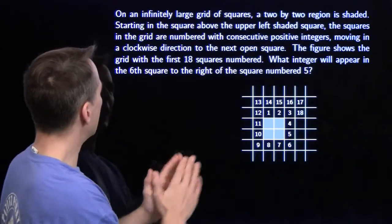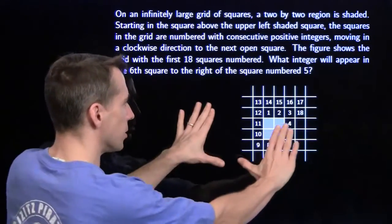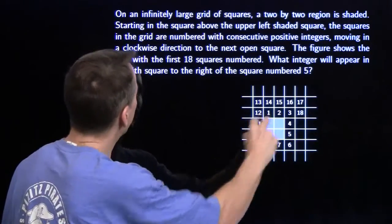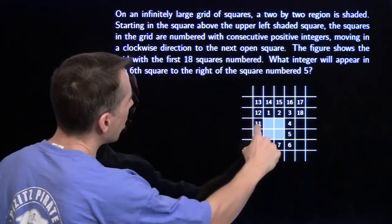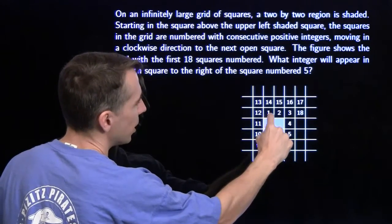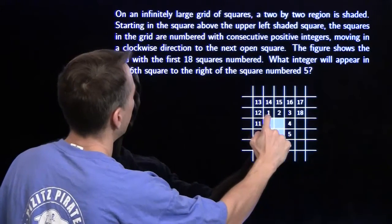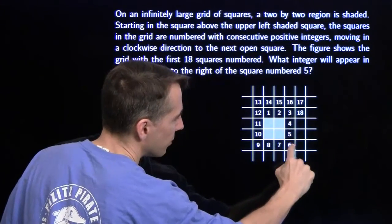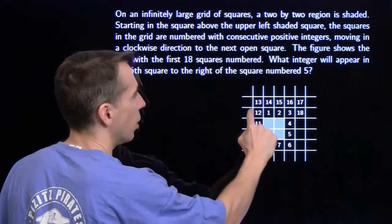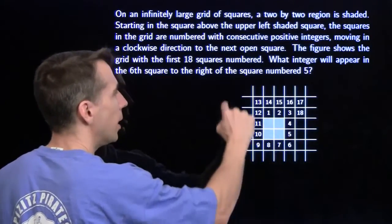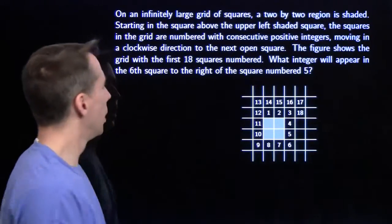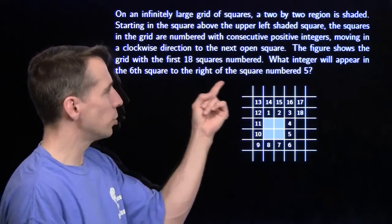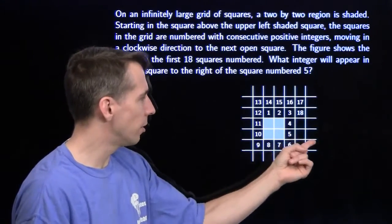Here we are — we've got an infinitely large grid of squares that goes on forever. There's a two-by-two region shaded in the middle. We start just above the upper-left shaded square and number the surrounding squares with consecutive positive integers: 1, 2, 3, 4, 5, 6, 7, 8, 9, 10, 11, 12, 13, spiraling around and around. We want to find the integer in the sixth square to the right of the square numbered five.